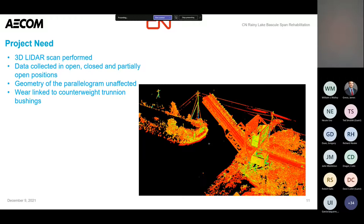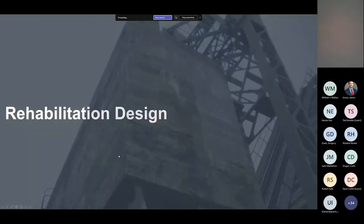Ultimately the outcome was that the parallelogram was remaining planar throughout the range of motion — the bent upper link members weren't causing any issues. We then determined that the wear between those two structural elements was actually linked to wear within the counterweight trunnion bushings — that rotation point under the counterweight that has a bronze bushing in it.